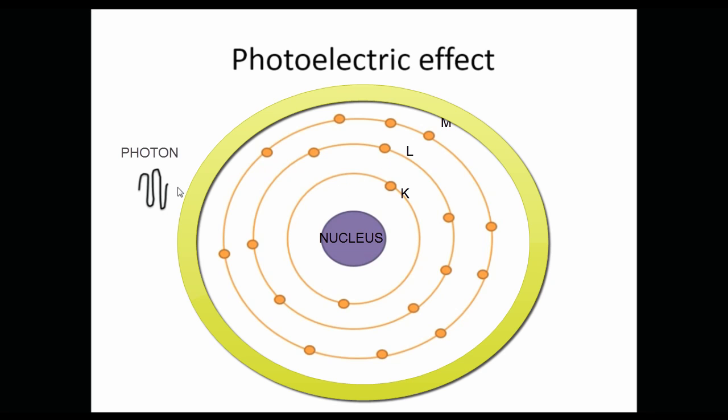In this photoelectric effect, the photon, this is a photon. This photon, when it interacts with this whole atom, it will interact with the inner most shell electrons. The electrons which are in the K shell are called tightly bound electrons because they are close to the nucleus.